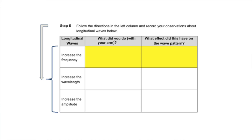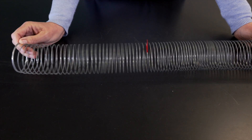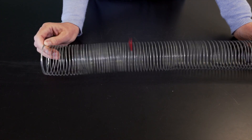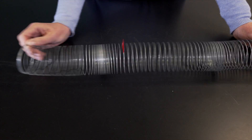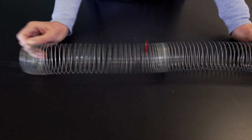As directed in step 5 of slide 5, I will make three different waves so that you can complete the data table. Again, pay attention to the motion of my arm as I make each of the three waves. Fill in this row after you watch the next clip. Here I am increasing the frequency of this longitudinal wave.